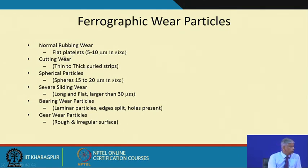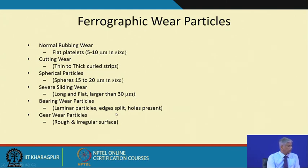Ferrography reveals oil wear particles which can sometimes be seen by the naked eye or under a microscope. Normal rubbing wear produces flat platelets about 5 to 10 microns in size. Cutting wear produces thin to thick curled strips. Spherical particles are 15 to 20 microns in size. Severe sliding wear produces long flat particles larger than 30 microns. Bearing wear particles are laminar with edges, plates, and holes present. Gear wear particles have rough and irregular surfaces.